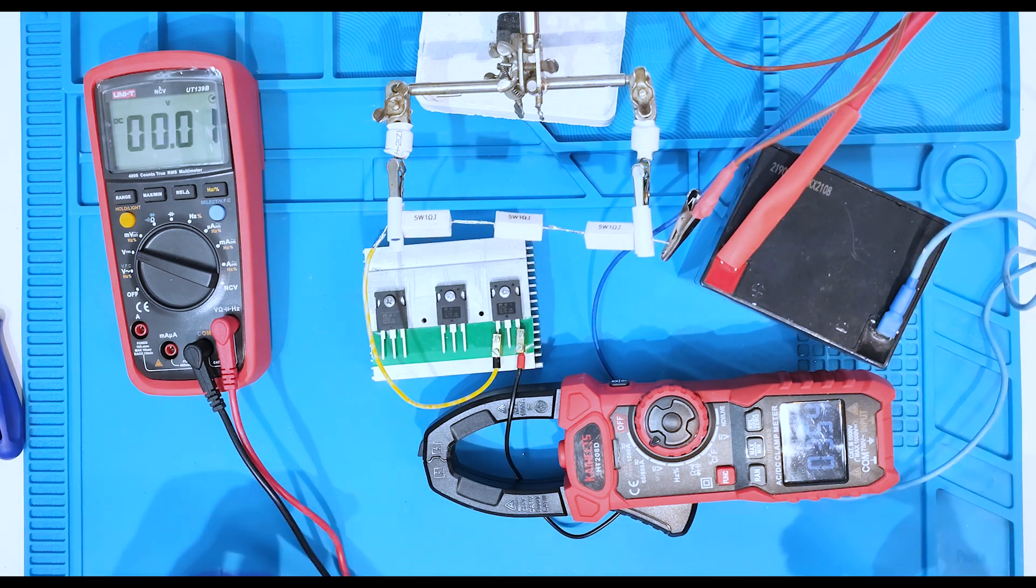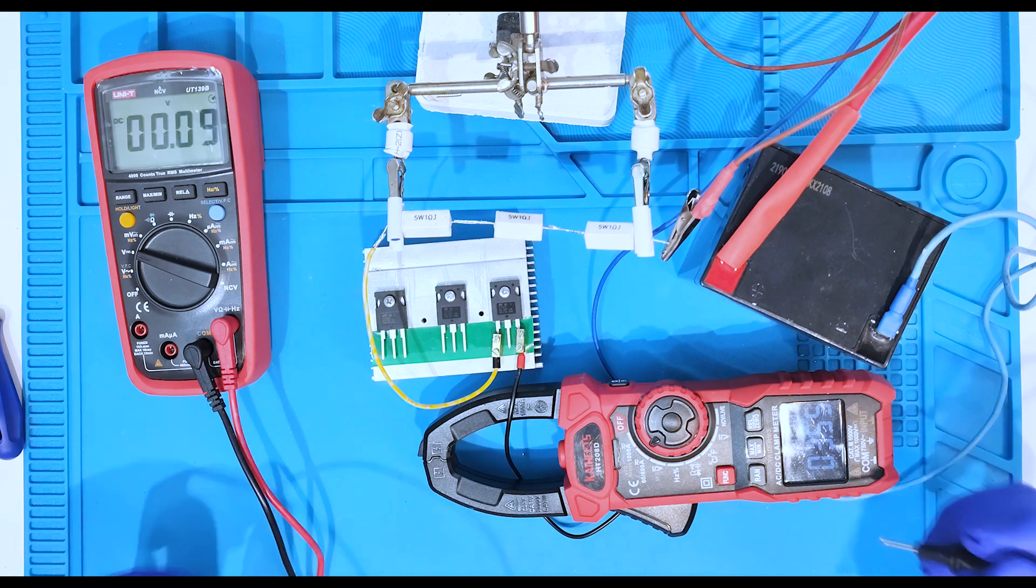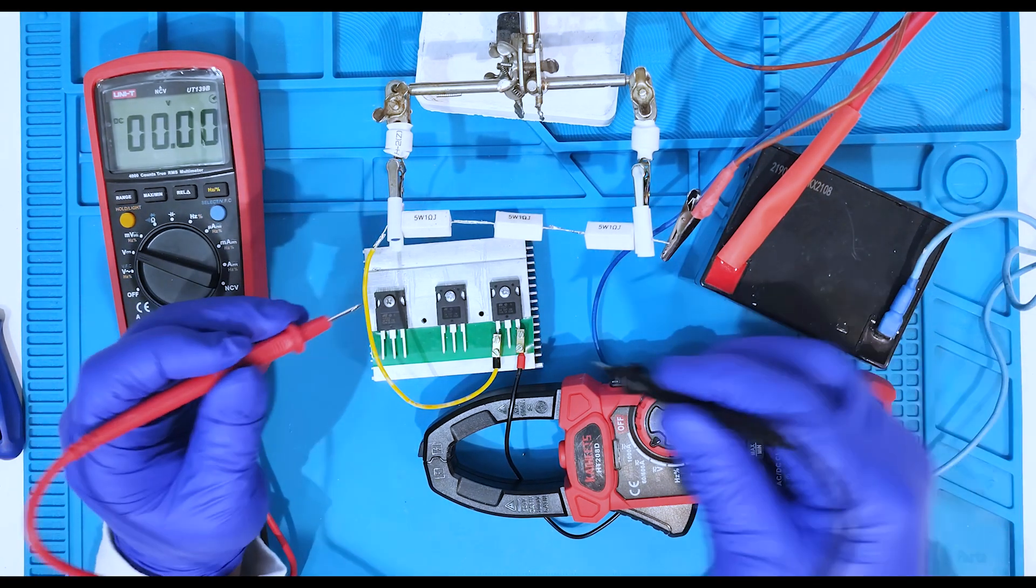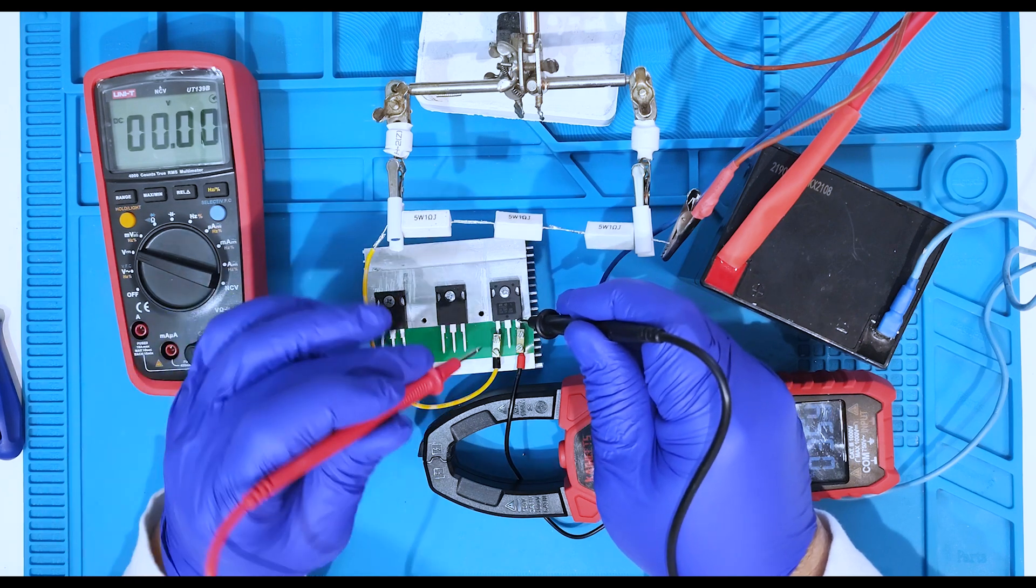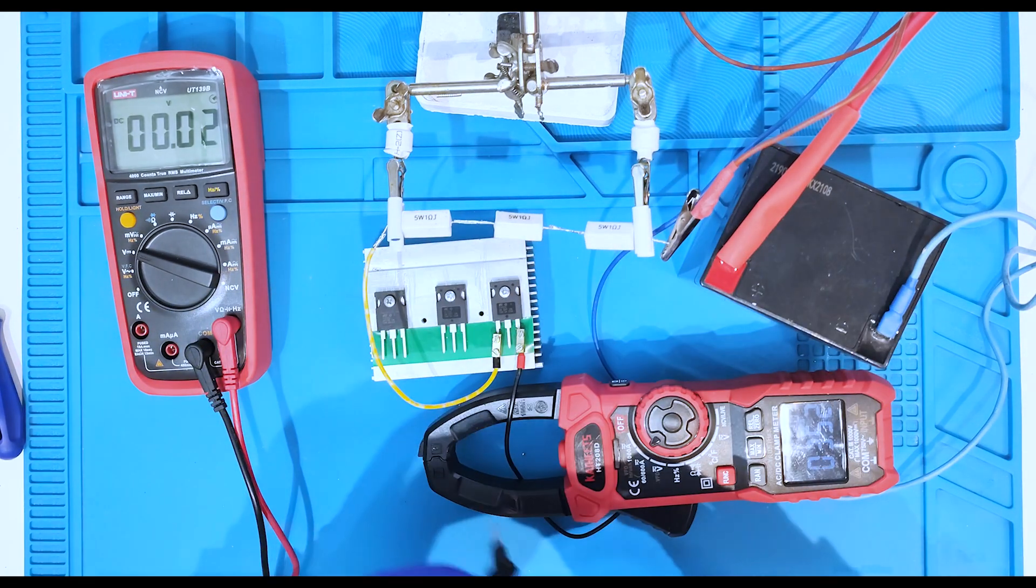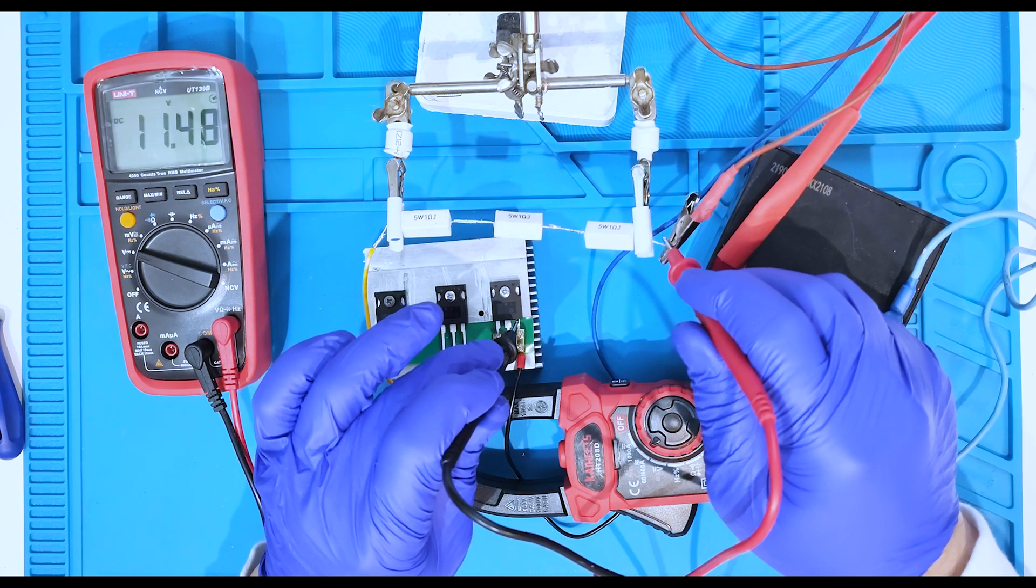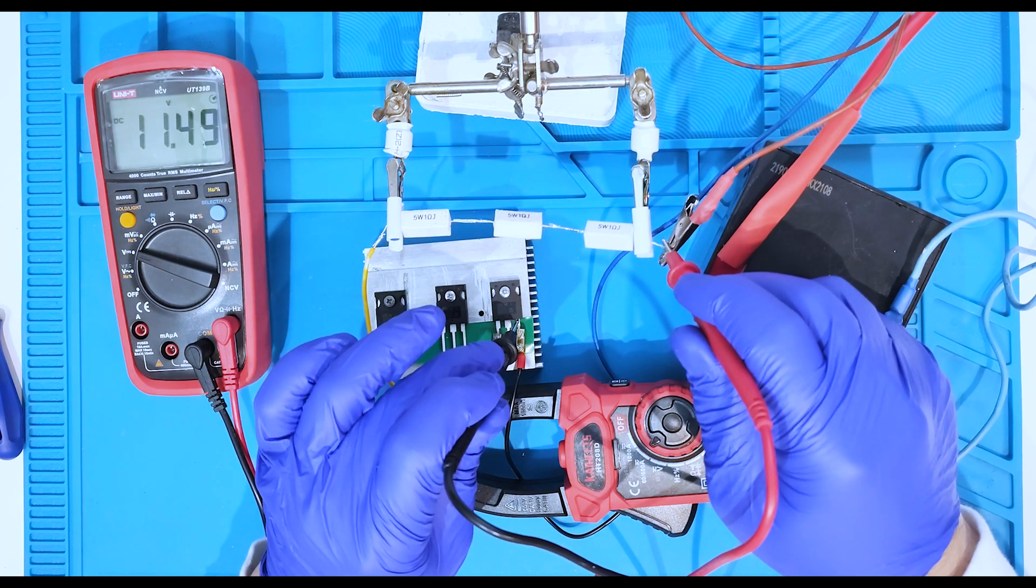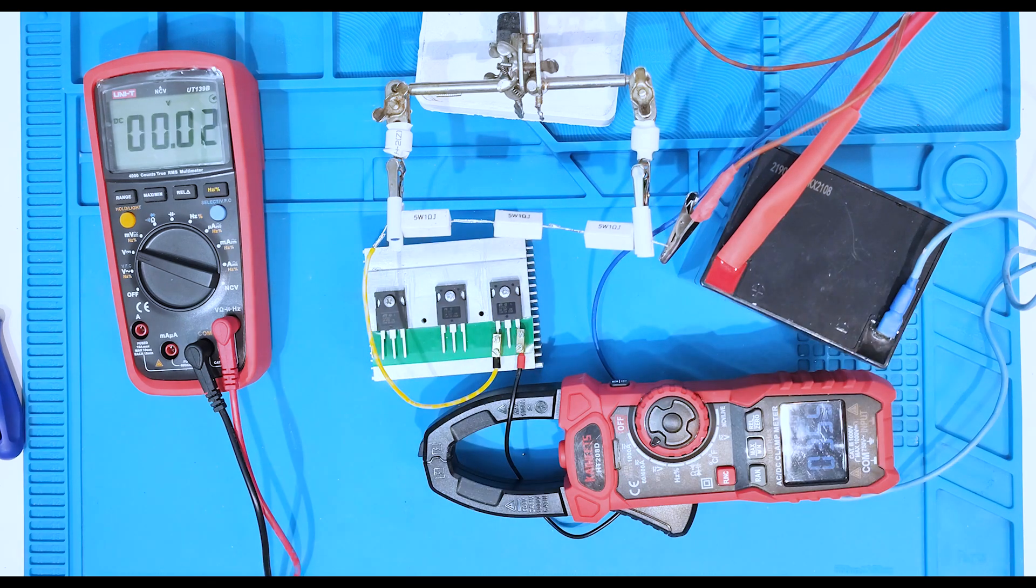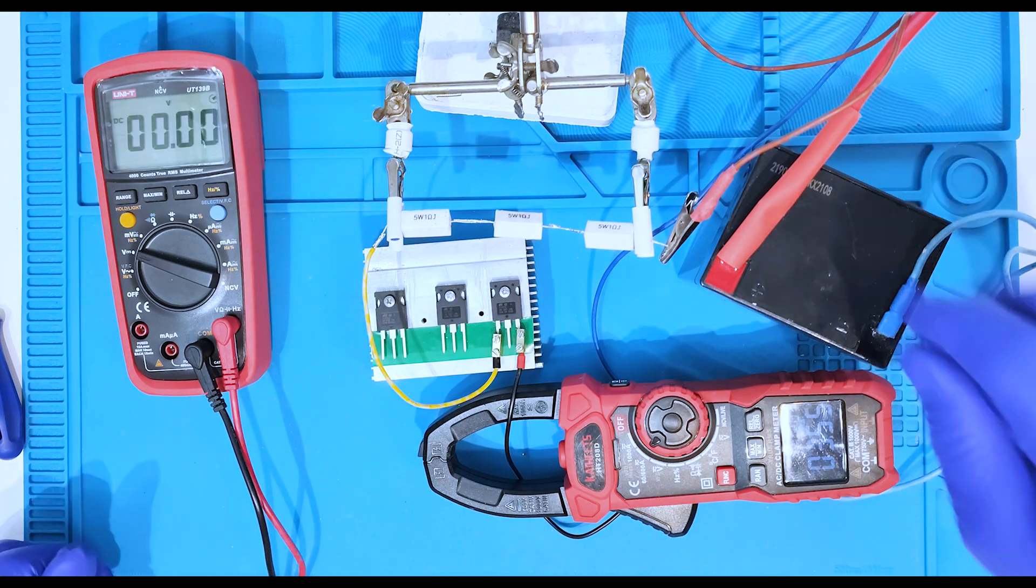And what we can see here? We can see that the current flow from the base to emitter of the transistor absolutely the same that we could see on the model of our circuit. Let's check the voltage. And we can see that here we have the 12 volts. And this voltage is absolutely safety for us.